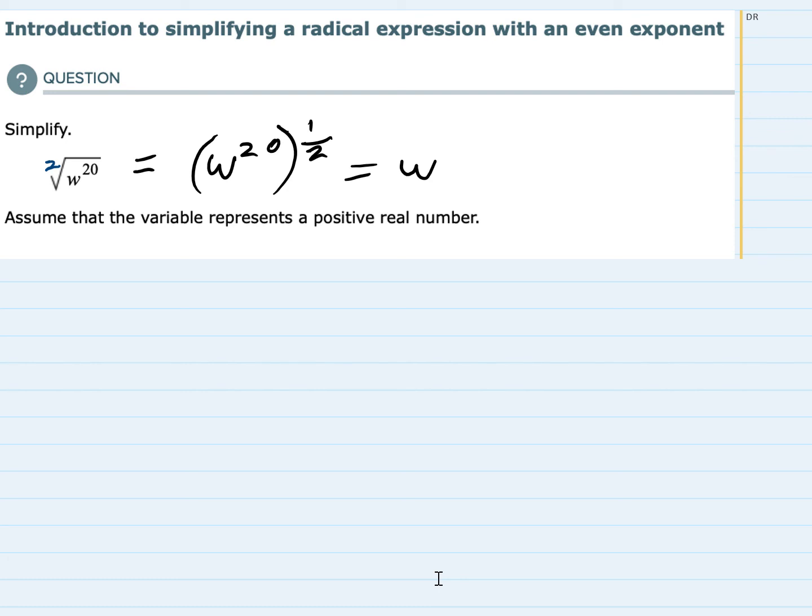So we have 20 times one-half which is 10. So in effect what that square root does to a variable being raised to a power is the square root gives us half of that. So the w to the 20, the square root, is w to the 10.